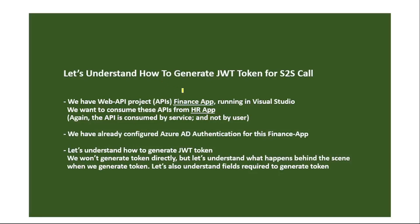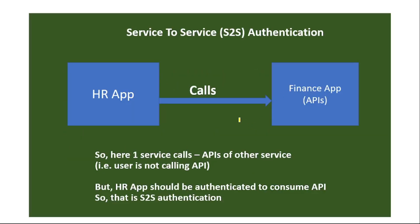In this video, let's understand how to generate a JWT token for service-to-service (S2S) calls and what the requirements are. We have a finance app with APIs, and another service called the HR app that wants to consume those APIs. One service calls the API of the other service — the user is not calling the API — but we need to make sure the HR app is authenticated to consume those APIs.